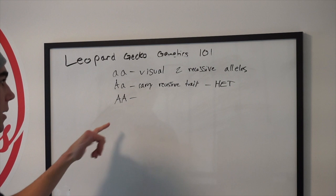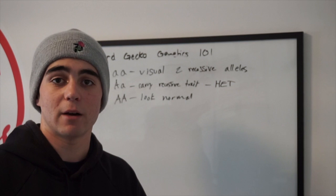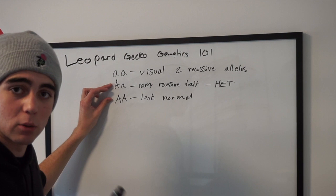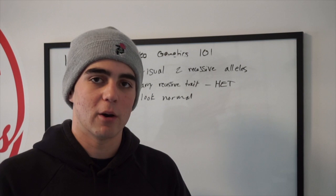If both alleles are dominant, the animal will look completely normal because there are no recessives present and it won't be able to pass down any recessives. So even though these two would look like completely normal leopard geckos, one of them would be a carrier for the recessive trait, one would not be, and one would be a visual of that recessive trait.